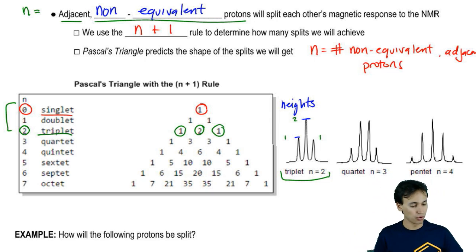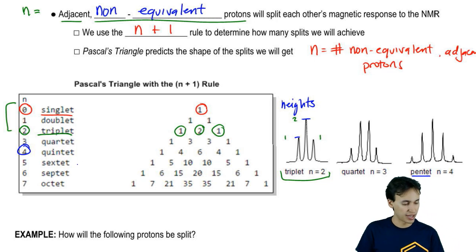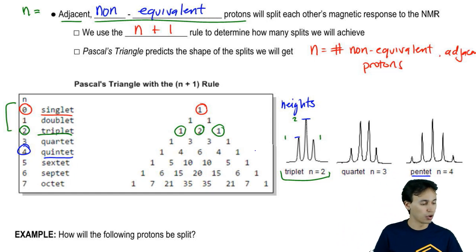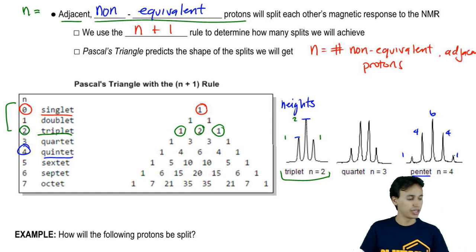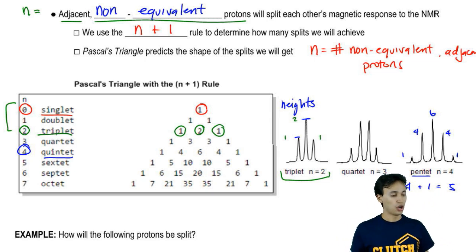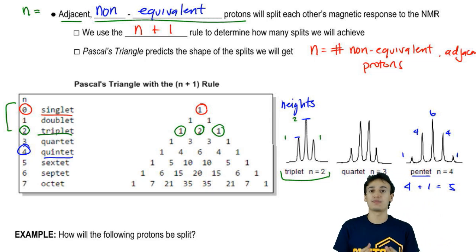Basically, you can use Pascal's triangle to model what your splits should look like. Going all the way to a quintet or a pentet, really technically it should be called a quintet. If you have a quintet, notice that your peaks are going to have five different splits and they're going to be of the size 1, 4, 6, 4, 1. And that's exactly what we see here. That is when n would equal to 4, so we'd have 4 plus 1 which equals 5 which would be our quintet. I hope that's making sense in terms of the shapes.